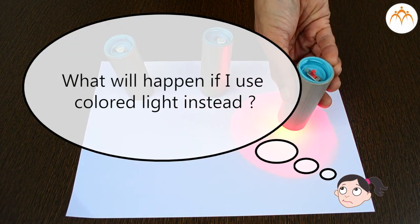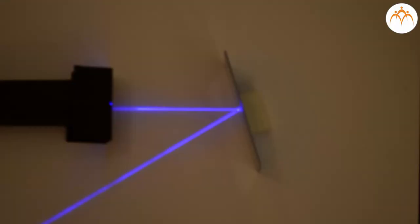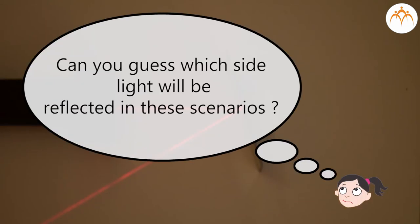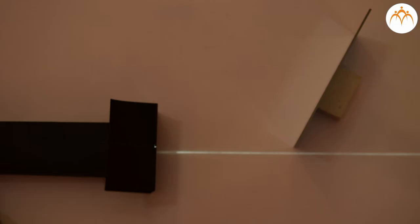What will happen if I use colored light instead? Color does not seem to matter. Ray is reflected in the same way. Now that you know how light is reflected by mirror can you guess which side light will be reflected in these scenarios?